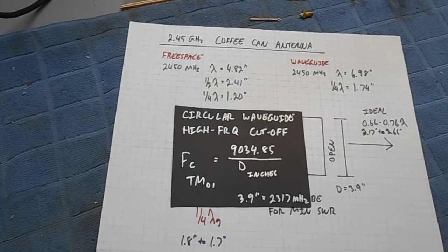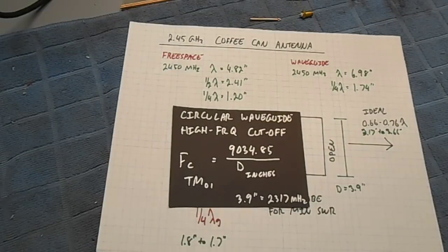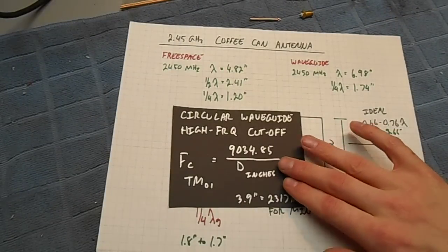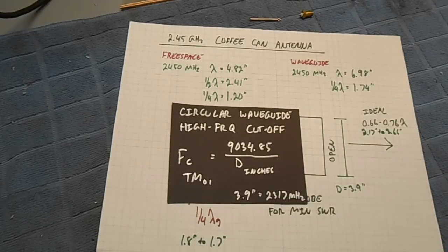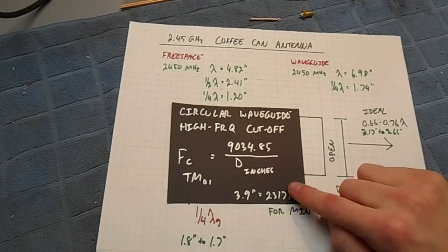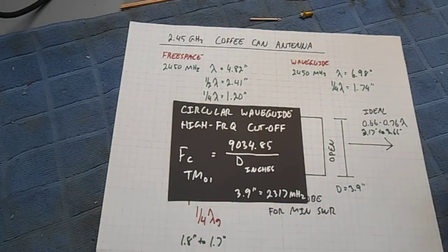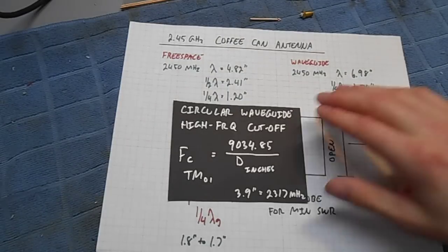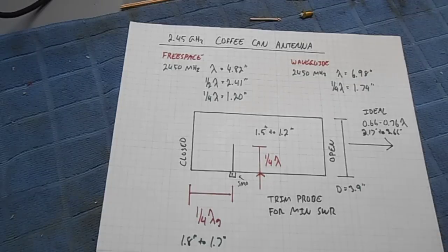The high-frequency cutoff, or the next mode, propagates through set by this equation. For our waveguide, the coffee can waveguide at 3.9 inches, the high-frequency technically is 2,317 megahertz. You're going to notice that we're operating at the wrong mode, but in reality, there's enough play that the 2450 megahertz signal will propagate in these homebrew coffee can antennas.